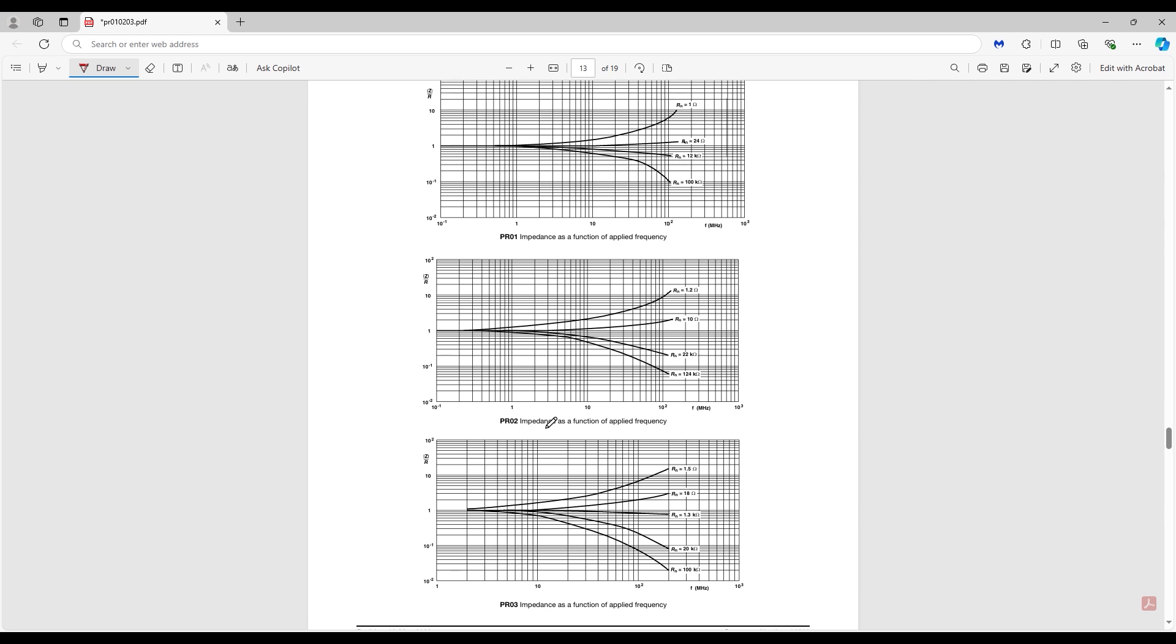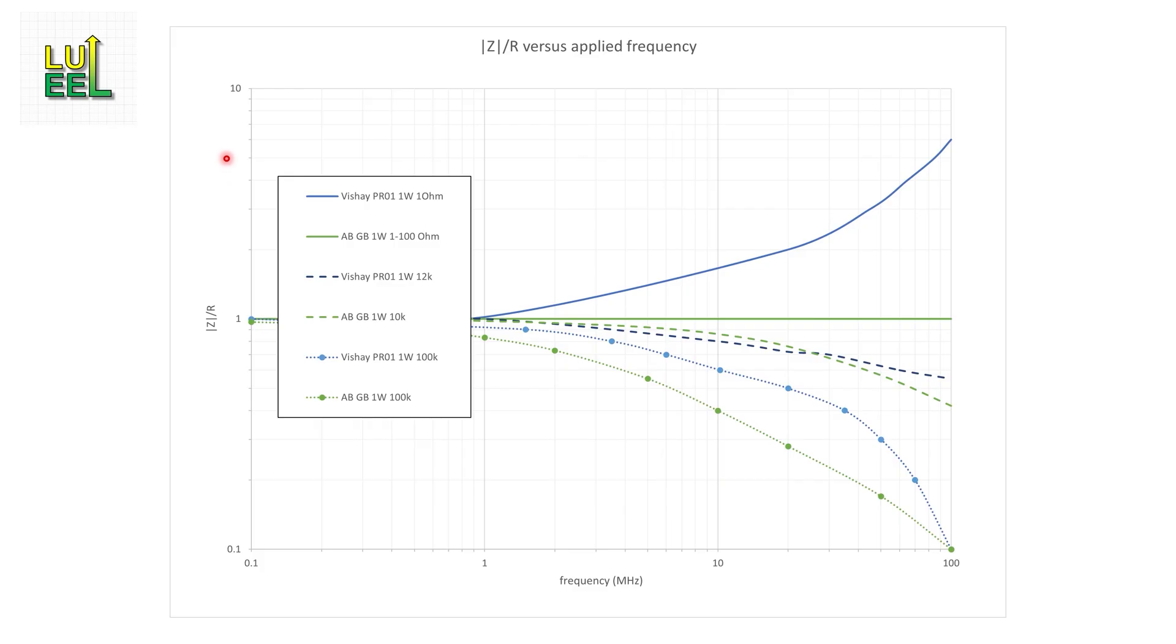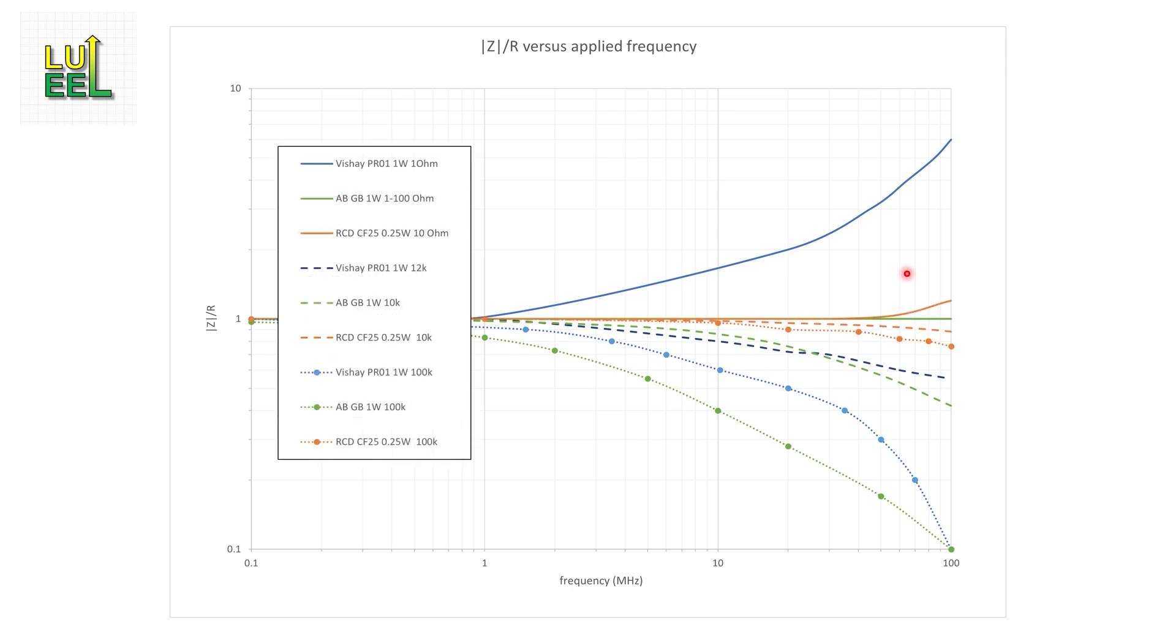And just like with the AB carbon comps, larger wattage metal films also have larger parasitic responses at any given frequency. In this case, both the inductive and the capacitive responses increase with increasing package size. I'm such a nerd about this subject that I actually took both 1 watt data sheets and replotted them on the same scale. And here's what that looks like. The blue curves are Vishay and the green curves are Allen-Bradley. The Vishay actually has less capacitive behavior than the ABs at higher resistance values. Around 10k ohms, it's kind of a push. And of course, the AB outperforms Vishay at low ohms. For kicks, I also put in plots for RCD CF25 carbon film series. Those are the orange curves. They perform the best of the three. There's barely any change in impedance ratio from 10 ohms to 100k ohms up to 100 megahertz.